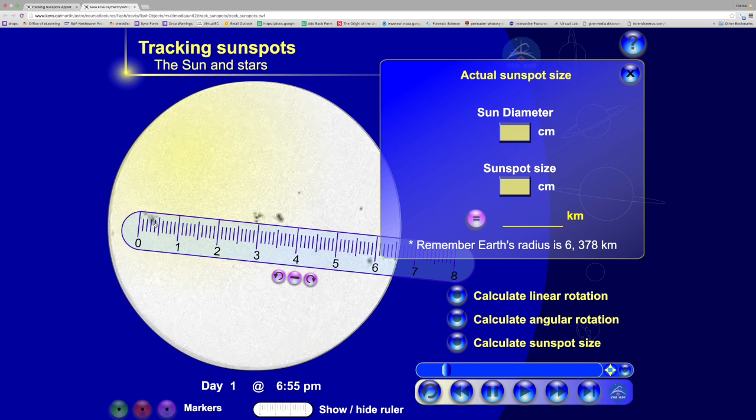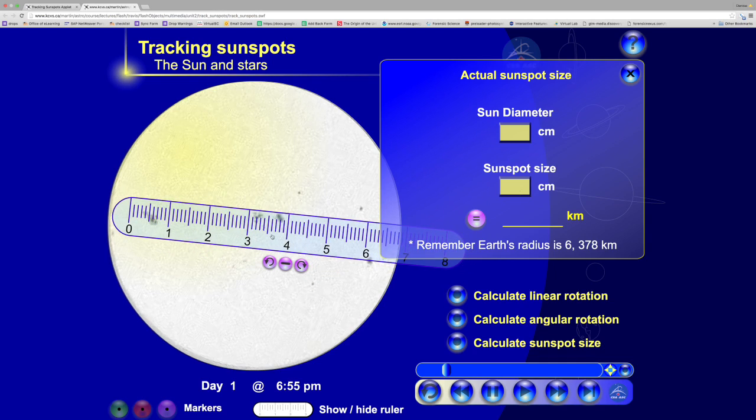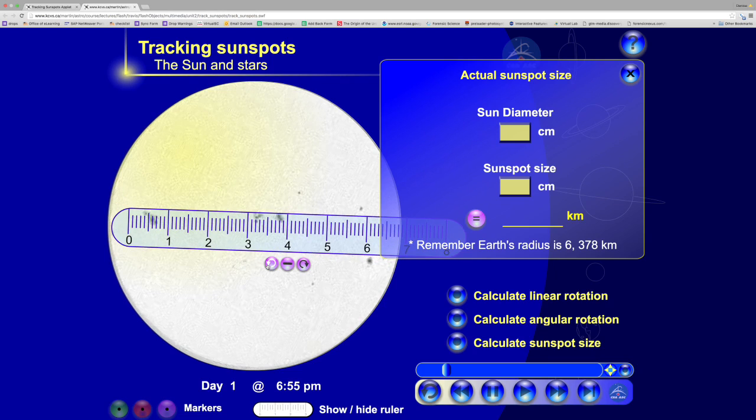Let's say from one end to the other, we measure the size of it and we'll put that as sunspot size. Then we're going to measure our distance across the Sun, and that will give you the Sun's diameter.